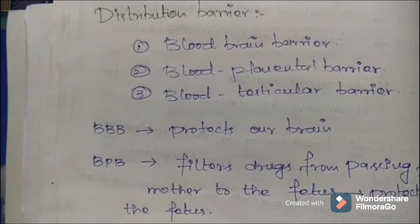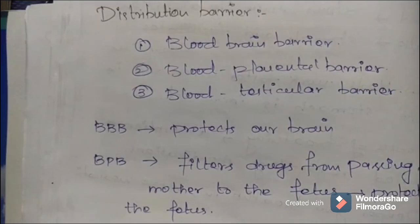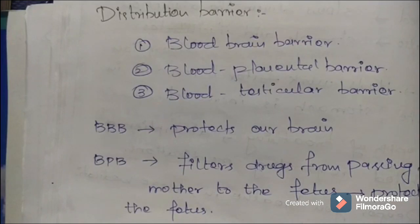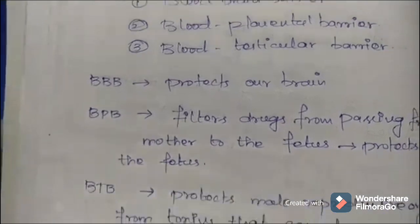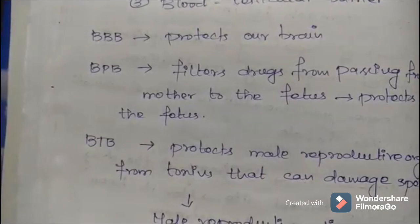There are three key barriers: the blood-brain barrier, the blood-placental barrier, and the blood-testicular barrier. The blood-brain barrier protects our brain and becomes a challenge for pharmaceutical companies when creating drugs that need to affect the brain, such as Alzheimer's medications. When medications cross the blood-brain barrier, there is a risk of serious side effects and sometimes permanent damage — for example, cytotoxic drugs.